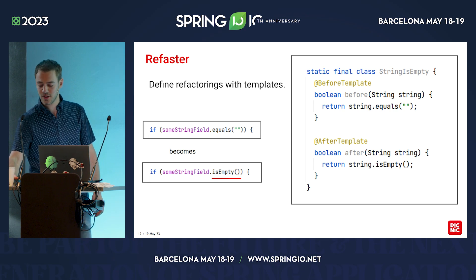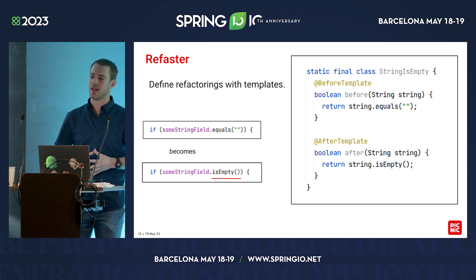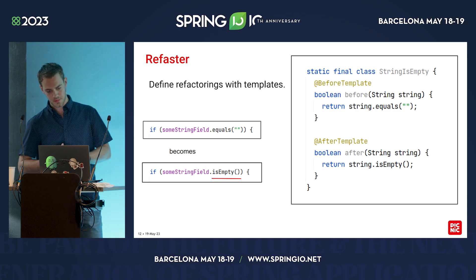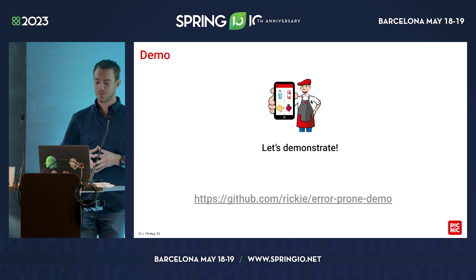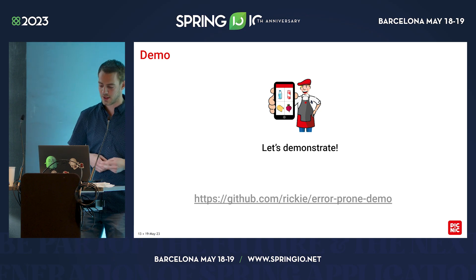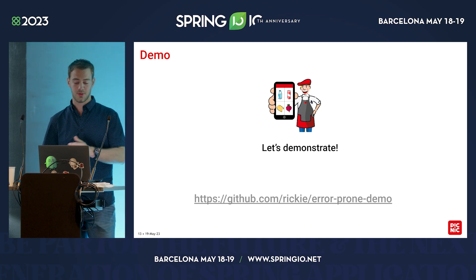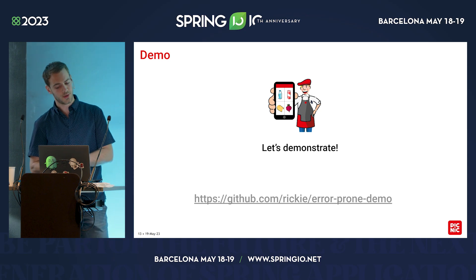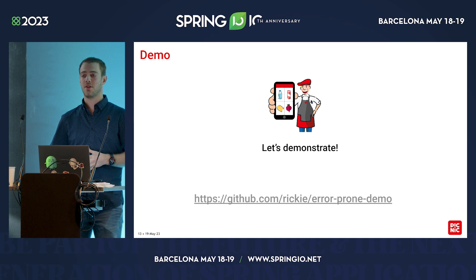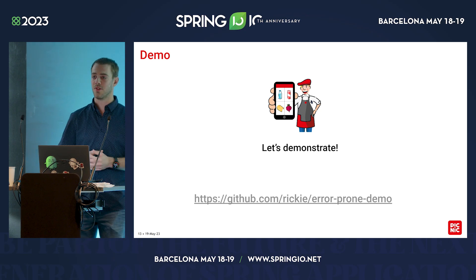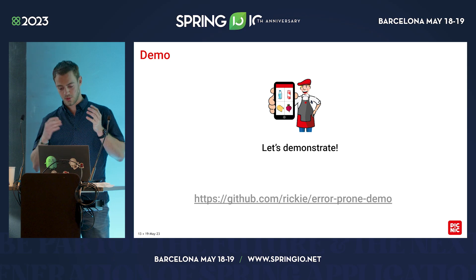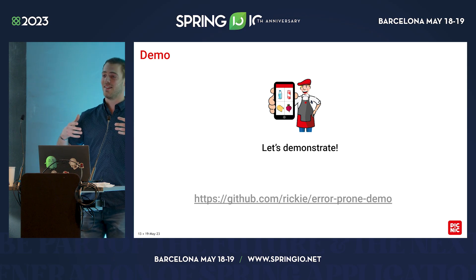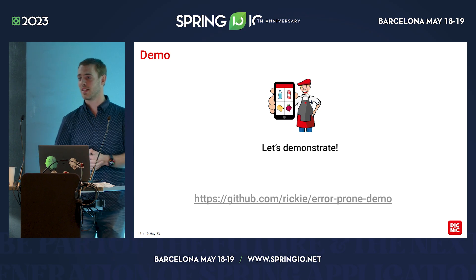There is one downside to using Refaster: it is limited because it can only do rewrites in expressions and statements, which generally means inside method bodies. Now that you know what error-prone and Refaster are, I want to show a little demo. But before I do, I need to explain two Maven profiles. I also have a link here which will be on the last slide with the actual demo code. The examples are based on Maven, but error-prone also works for other build systems like Bazel and Gradle.